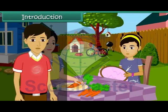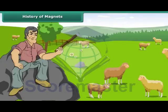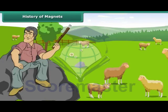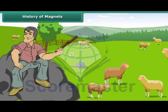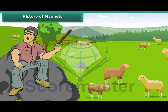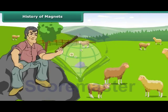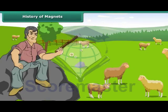Children, in this lesson we will learn about magnets and their properties. History of magnets: there is a popular legend that leads us to the discovery of magnets, which involves an elderly Greek shepherd named Magnus. It says that Magnus was herding his sheep in an area of northern Greece called Magnesia, about four thousand years ago.